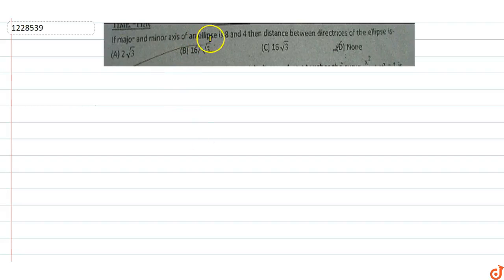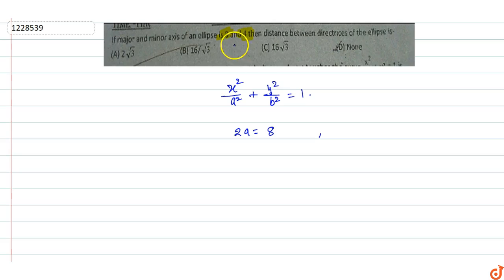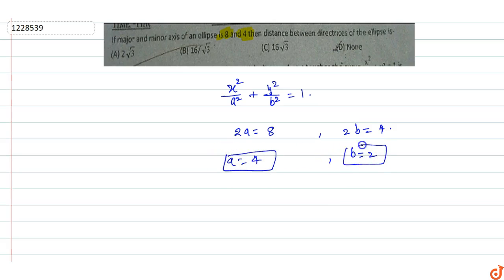In this question, the major and minor axis of the ellipse are 8 and 4. The length of the major axis is 2a = 8, so a = 4, and the length of the minor axis is 2b = 4, so b = 2.